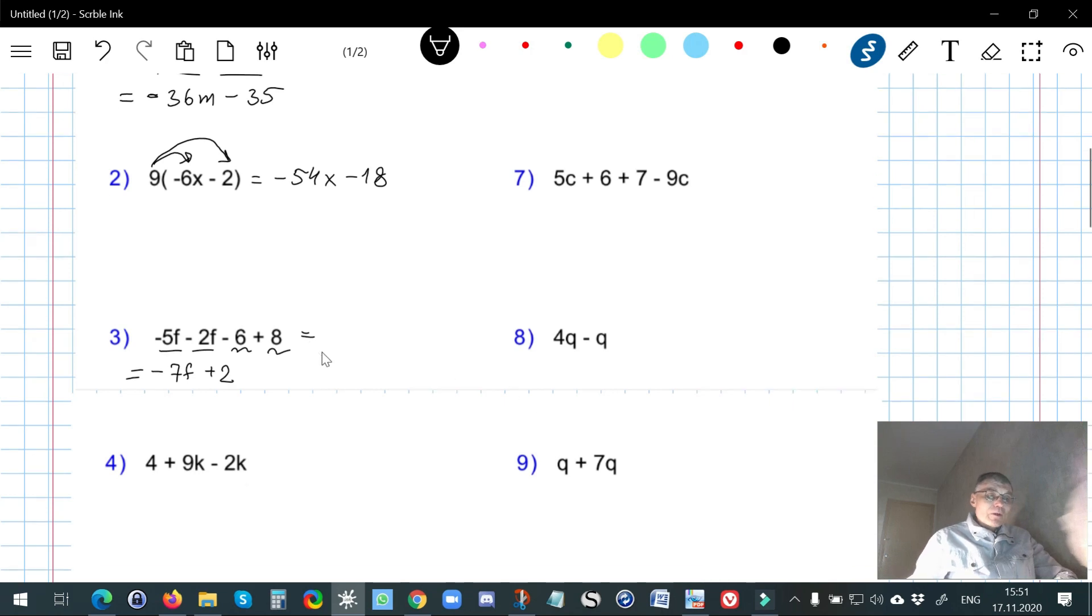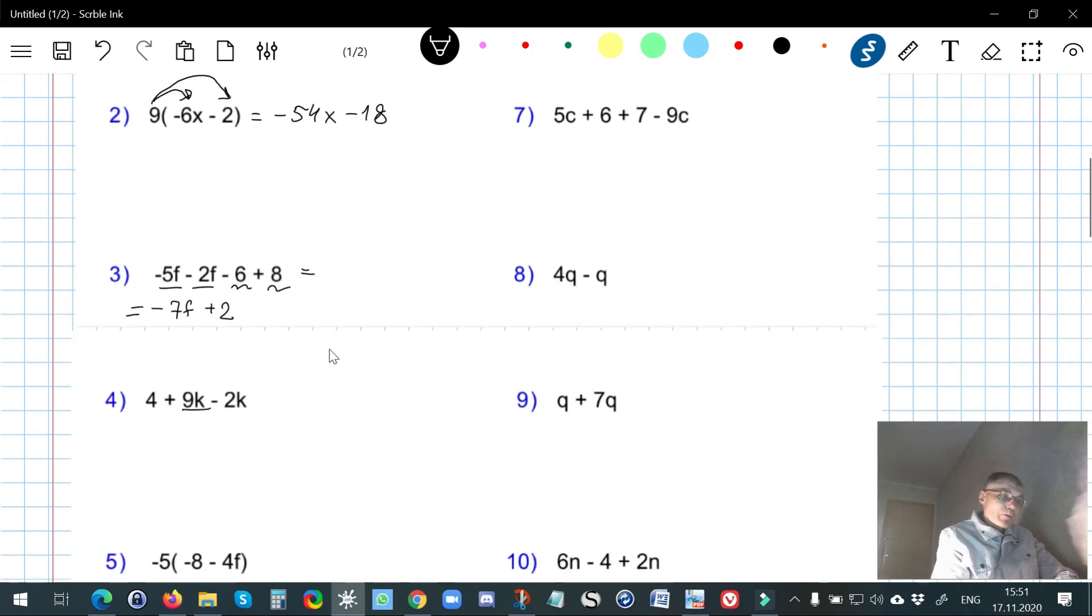Here in number 4, I have to just combine. By the way, when the expressions are quite bulky, you can underline like I do the like terms, not to forget about them. Sometimes it helps us avoid mistakes. So positive 9 plus negative 2 gives us 7, positive 7. So we get here 4 plus 7k.